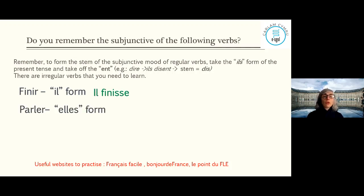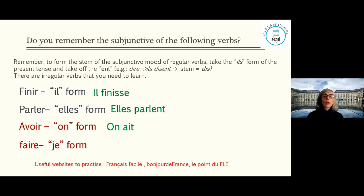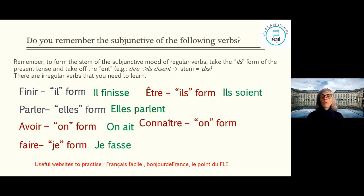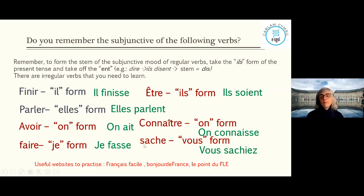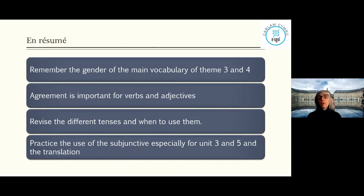Examples of subjunctive forms: 'faire' → 'je fasse'; 'finir' → 'il finisse'; 'être' → 'il soit'; 'connaître' → 'on connaisse'; 'savoir' → 'vous sachiez'; 'dire' → 'il faut que je dise'. Look up endings on websites like Français Facile, Bonjour de France, or Le Point du FLE. In summary: remember the gender of main vocabulary for themes 3 and 4; remember agreement for verbs and adjectives; revise tenses and when to use them; and practice the subjunctive, especially for Units 3 and 5.